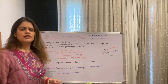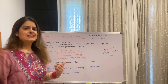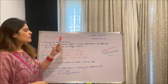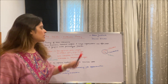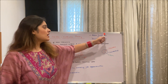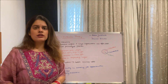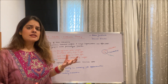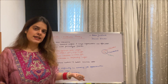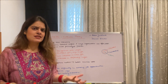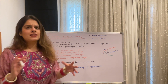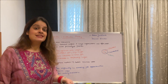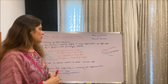Now going ahead with explaining what exactly is this insider-outsider theory or insider-outsider model. Firstly, let us know who discovered this model. This model was discovered by Asar Lindbergh and Dennis Snower. These are the two people who actually discovered this model, and now we'll be understanding who are actually insiders and who are actually outsiders. In this model it's nothing very different from the literal meaning of insider and outsider.